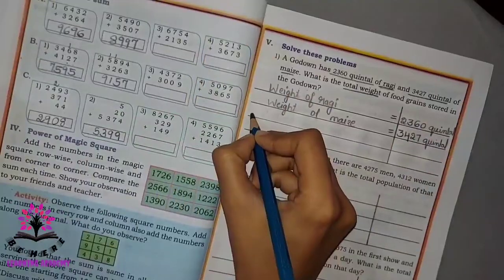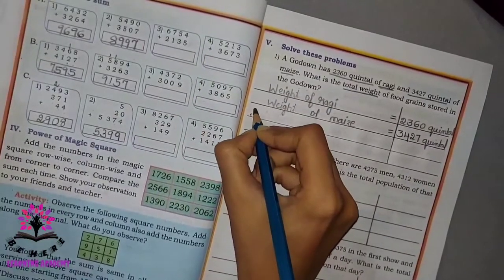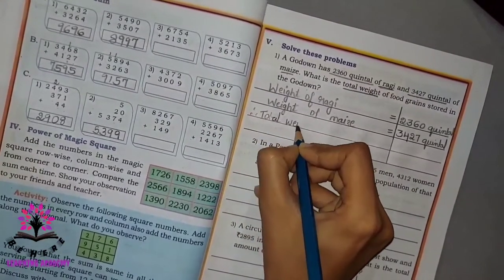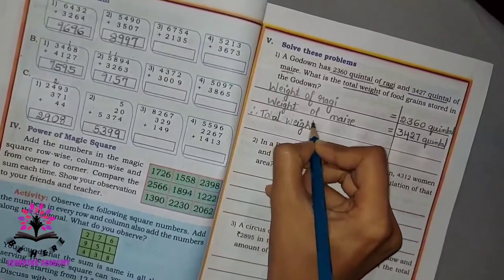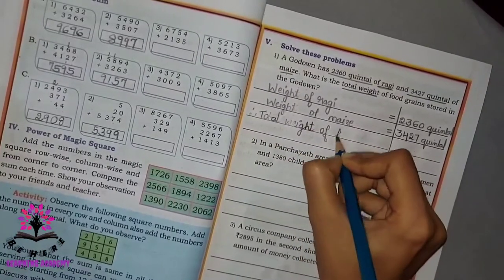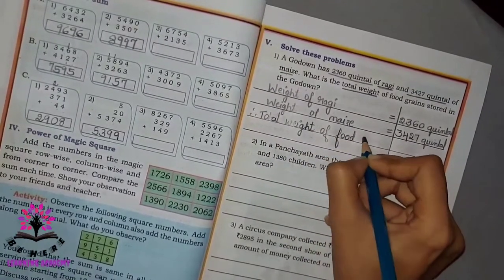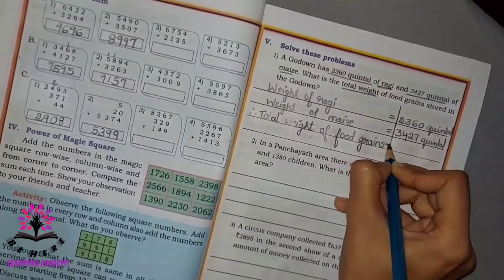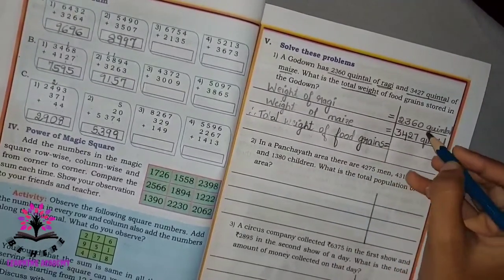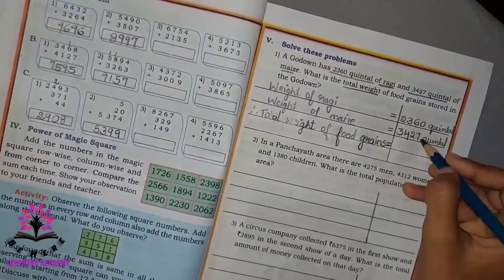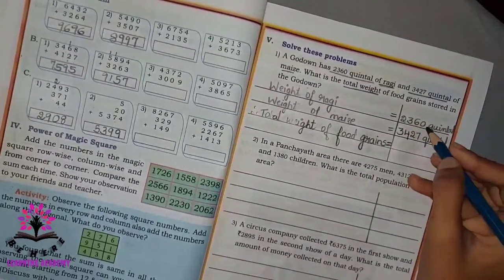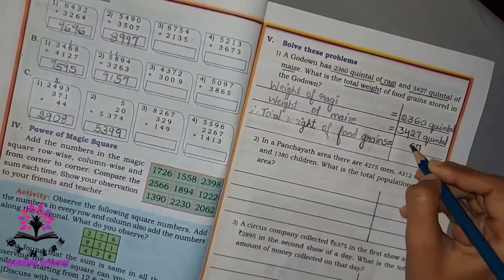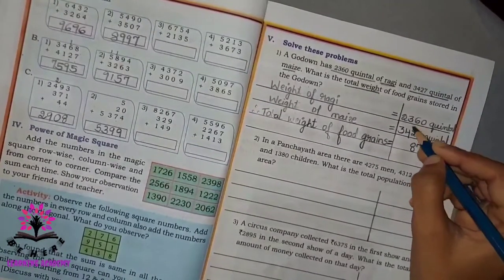Total weight, therefore represented by three dots, total weight of food grains is equal to... you have to add now. 0 plus 7 equals 7, 6 plus 2 is 8, 3 plus 4 is 7, 2 plus 3 is 5.